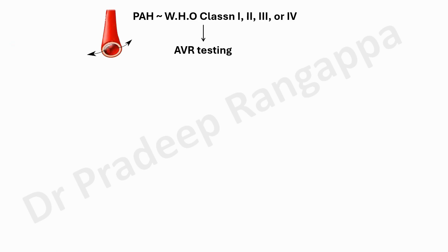From the algorithmic point of view, the current recommendation is to first do acute vasodilator response testing. Honestly, in my ICU I have not seen any patient having undergone this testing. PH clinics or cardiologists are meant to do vasodilator response testing and determine if the patient is responsive. In ICU they are symptomatic so we would not do that.